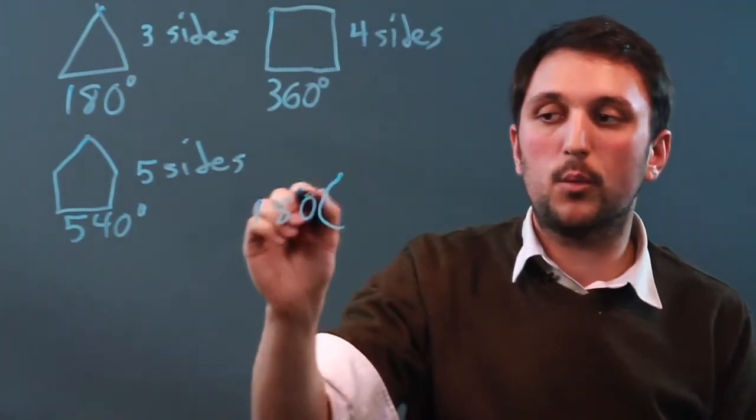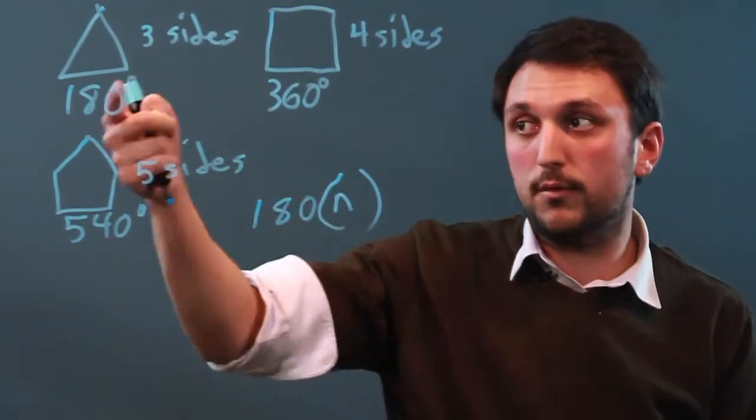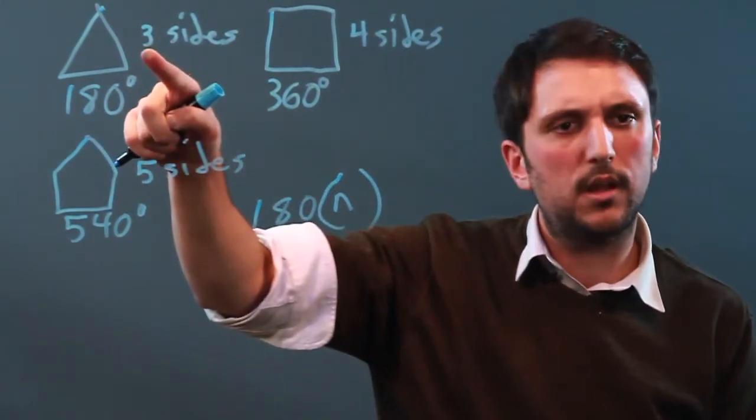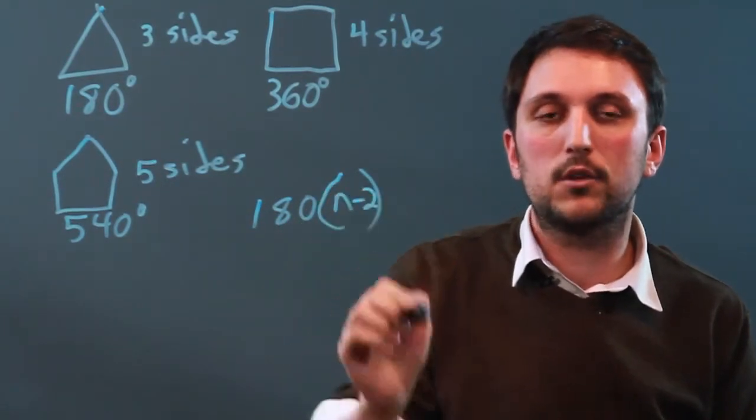But we can't just say 180 times n, because then if n were 1, we'd have 180, but n needs to equal 3 to start. So we actually have to say n minus 2.